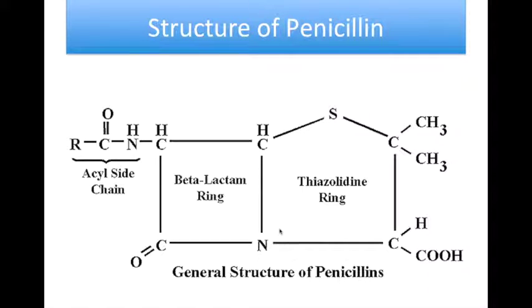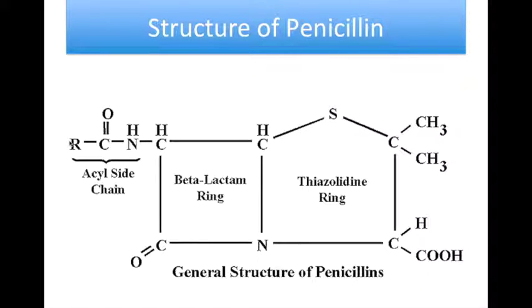Together, the beta-lactam ring and the thiazolidine ring are known as the bicyclic system. The bicyclic system confers further strain on the beta-lactam ring. It is thought that the greater the strain, the greater the activity, the greater the instability of the molecule to other factors. The beta-lactam ring carries the aminoacyl side chain. Substitution can be made on the R position. Substitution with an electron-withdrawing group renders the amide oxygen less nucleophilic. A substitution with a bulky group provides steric hindrance to beta-lactamase. And finally, incorporation of a polar group makes it more hydrophilic.